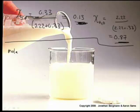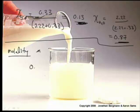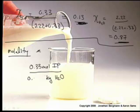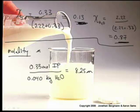Let's do the molality next. The symbol for molality is a small cursive m, not a capital M for molarity. Molality is moles of solute per kilogram of solvent. The moles of the solute is 0.33 moles of isopropyl alcohol, divided by the kilograms of solvent - water. We have 40 grams of water, which is 0.04 kilograms. So 0.33 divided by 0.04 gives us an 8.25 molal solution.